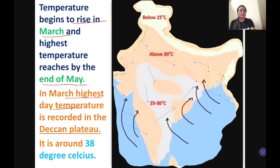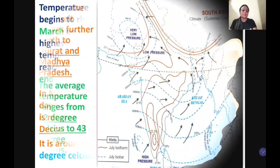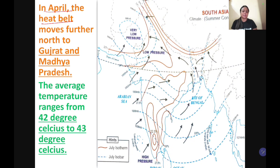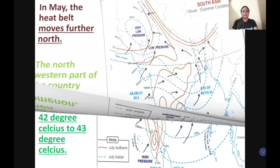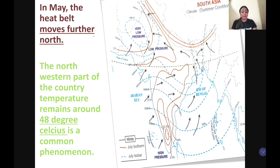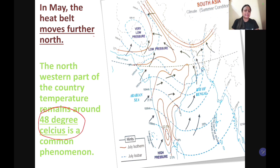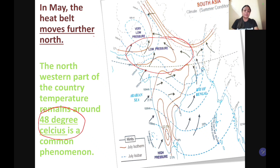In March, the highest day temperature is recorded in the Deccan Plateau, around 38 degree Celsius. In April, the heat belt moves further north towards Gujarat and Madhya Pradesh, with average temperatures of 42 to 43 degree Celsius. In May, the heat belt moves further north to the northwestern part of the country, where temperature reaches 48 degree Celsius, because of the direct heat of the sun coming into the northern hemisphere.